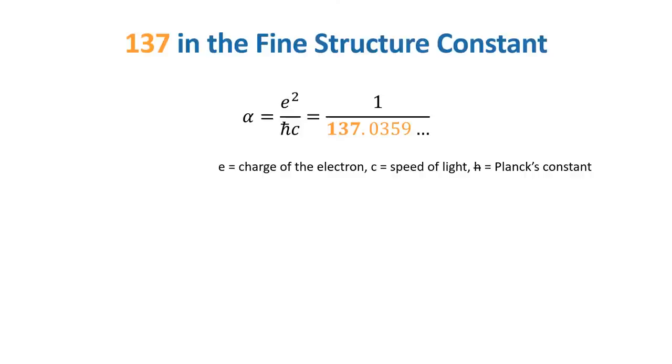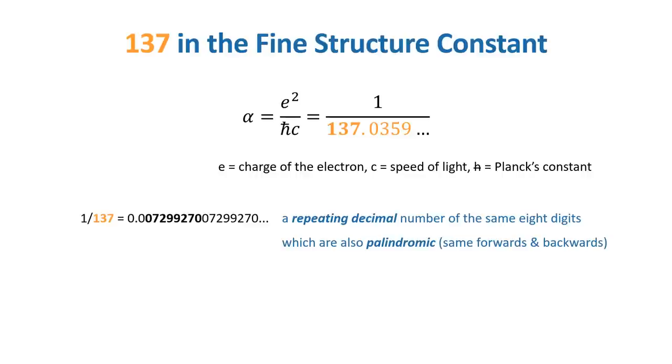So I guess we shouldn't be surprised that 1 over 137 of the electromagnetic bond also happens to equal 0.007, another enigmatic bond with a license to kill. Another quirk about the number 1 over 137 is that it equals a repeating decimal number with the same eight repeating digits of 0729, 9270, and which are also palindromic, meaning they read the same forwards or backwards.